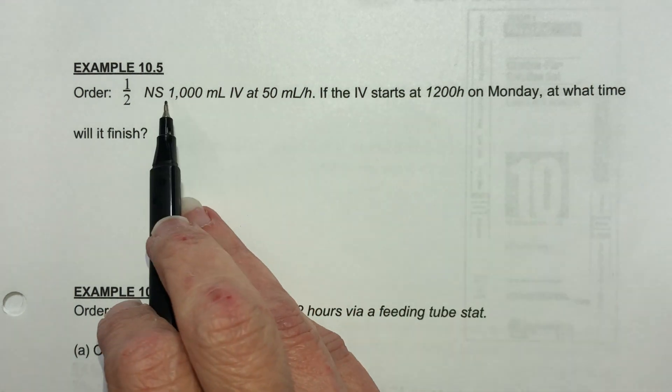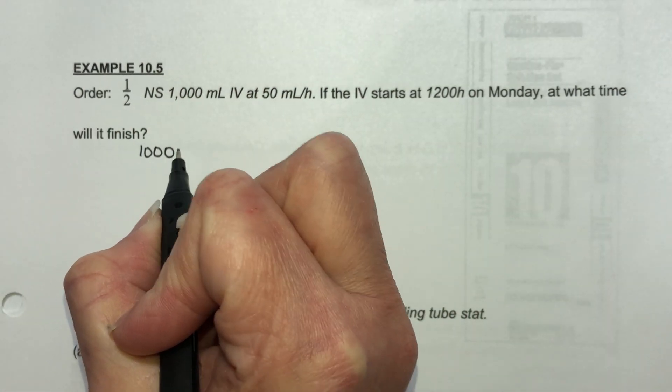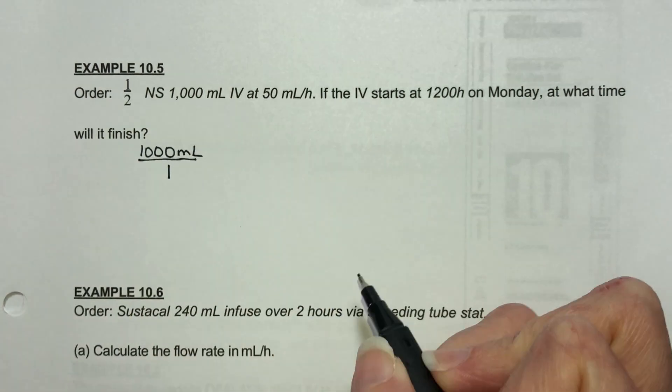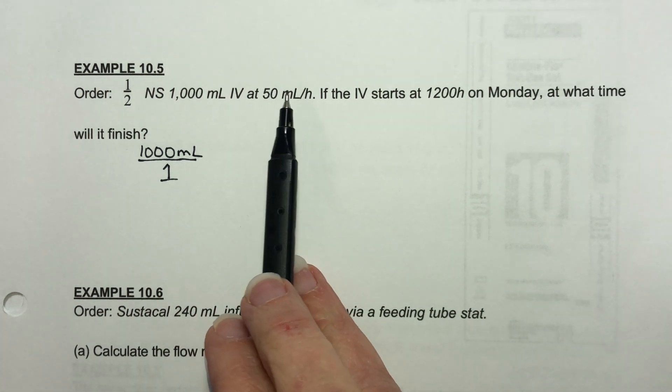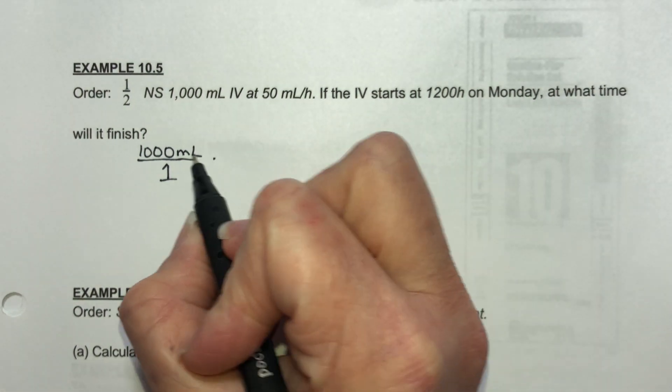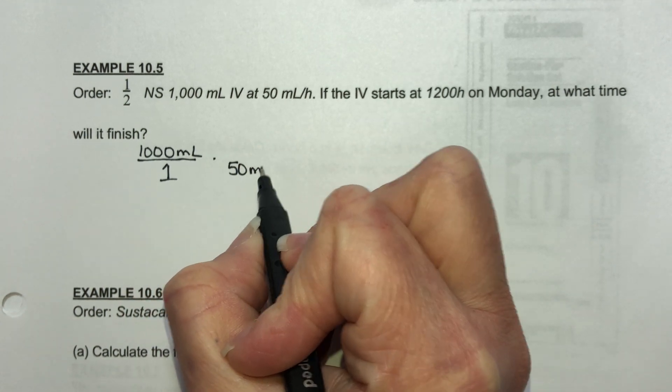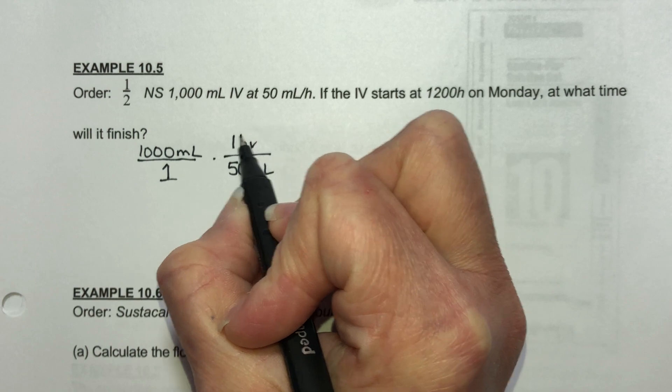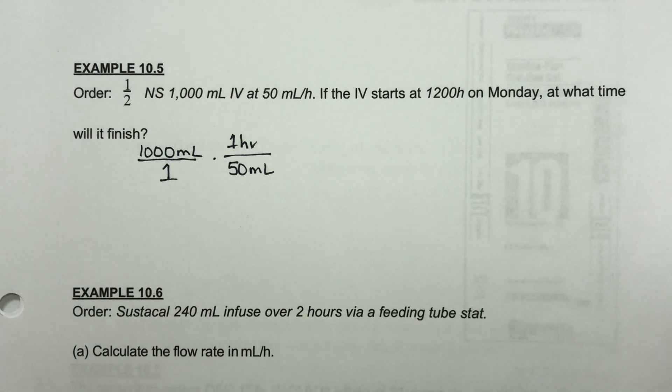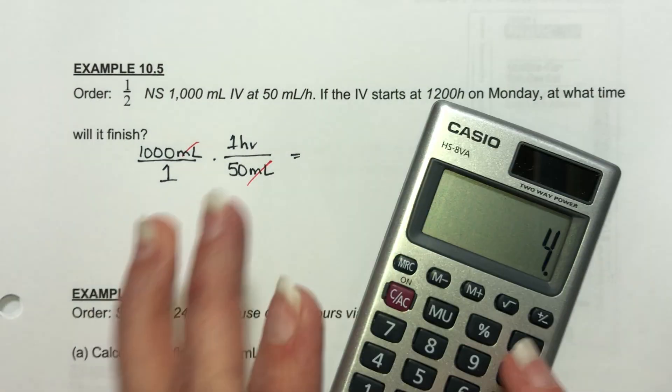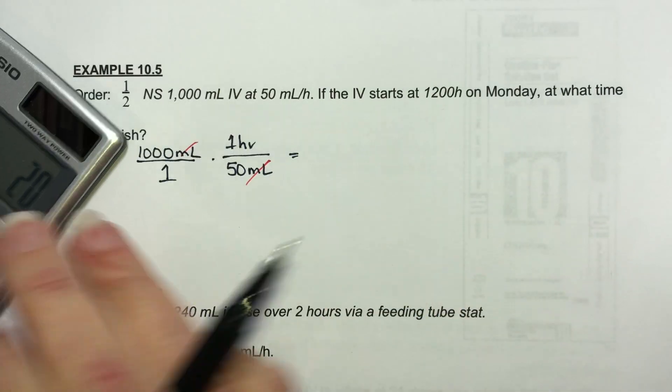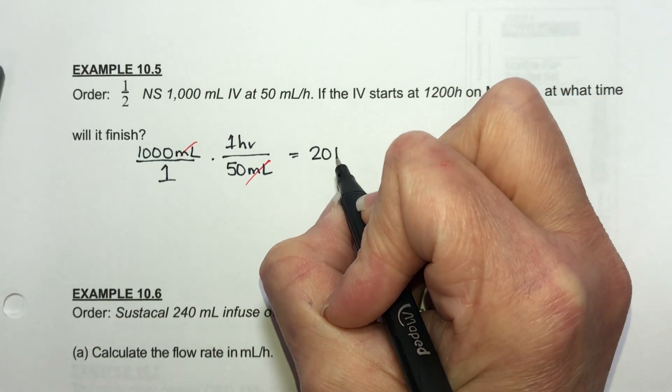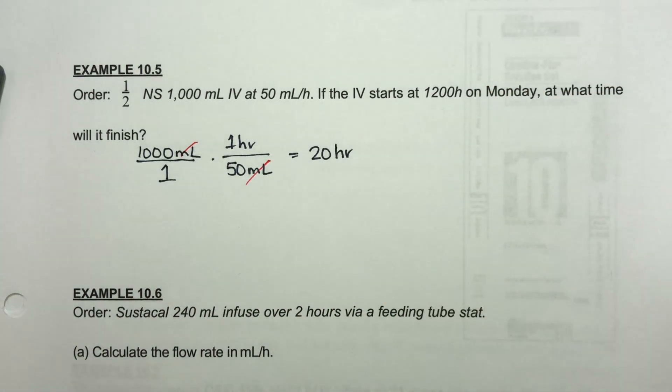I'm going to start off with 1,000 milliliters and I want to convert this into hours so that I know what to add here. My rate is 50 milliliters an hour so I'm trying to cancel out the milliliters. I'm going to put the 50 milliliters in the bottom and one hour in the top. The milliliters cancel out. Our answer is going to be in hours and we're going to end up with 1,000 divided by 50 which is 20. So it's going to take 20 hours to complete this infusion.